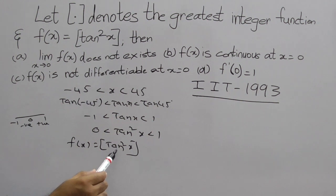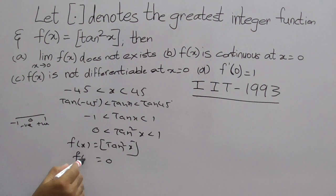Therefore, this is 0 point something. The greatest integer of 0 point something gives only 0. So, given f(x) is 0 here.